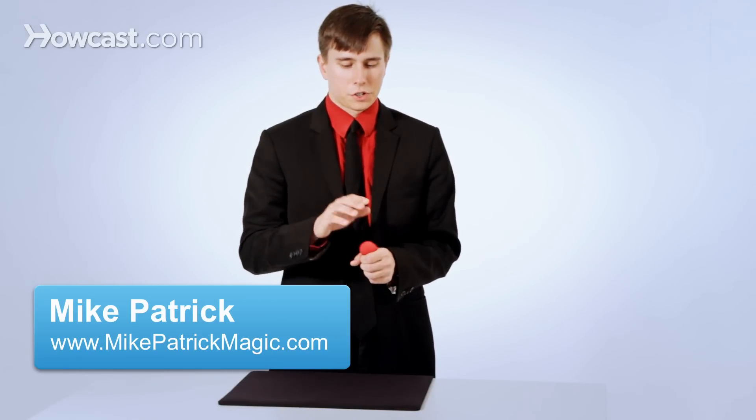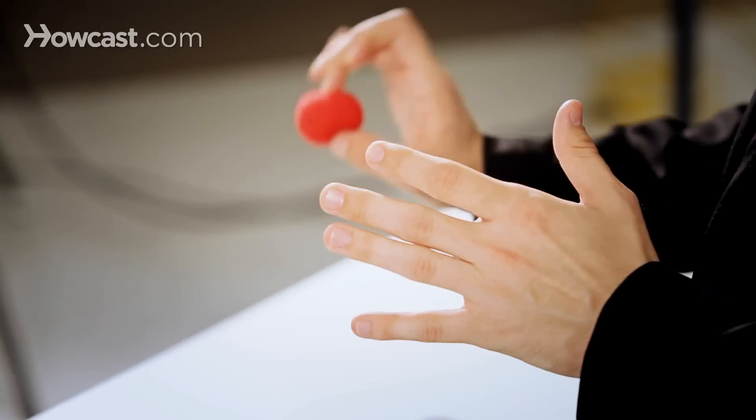Hi, I'm Mike Patrick and this is how to do a top of the fist sponge ball vanish. You simply place the ball into the hand, blow, and it disappears. It's over here.